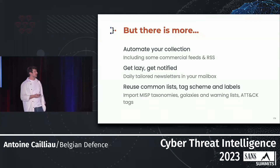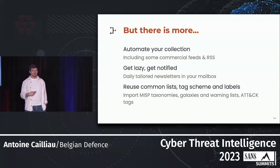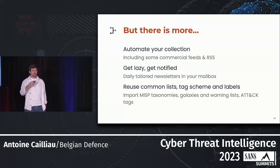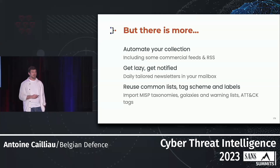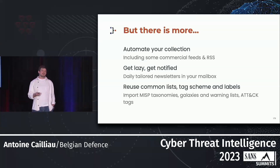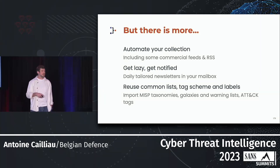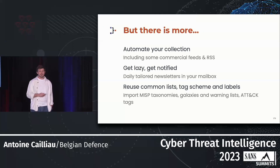You can also get notified for all the reports that come into the platform and that match what you need. For example, if I'm interested in Chinese threats, I can subscribe to the tag 'source geography China' and then get a notification every time a matching report is added. Of course, you have plenty of tags, and it might be painful for a new organization to generate all of them. So you can import existing taxonomies, existing galaxies, warning lists, ATT&CK framework, or whatever, to prepopulate and help you bootstrap your repository using the tool.